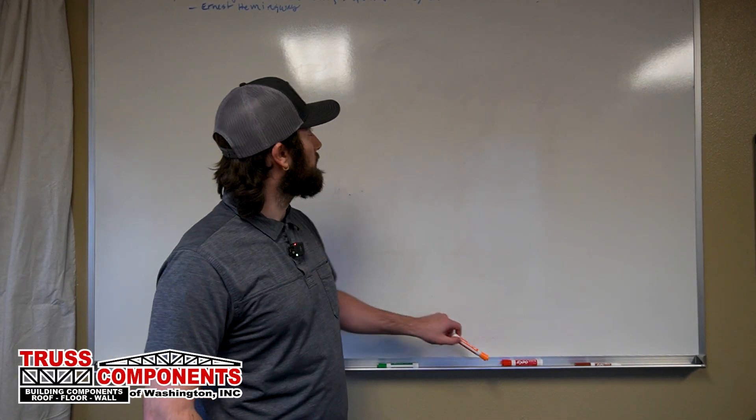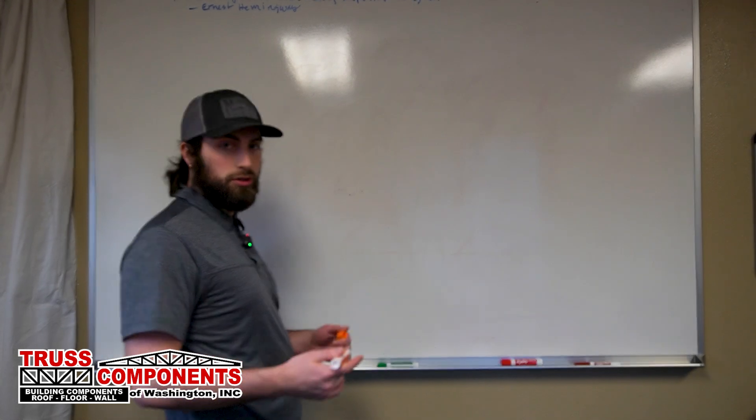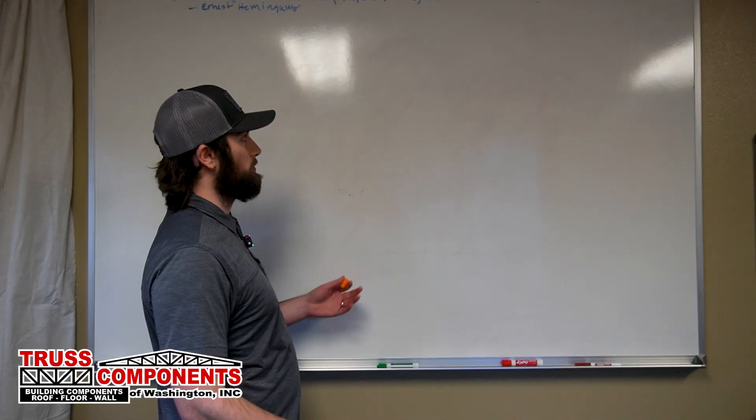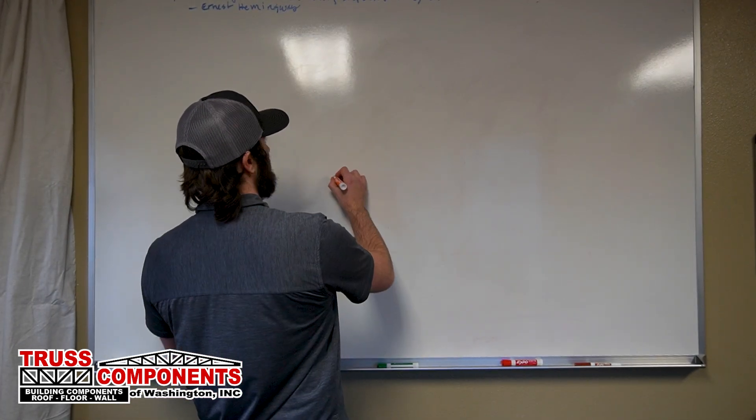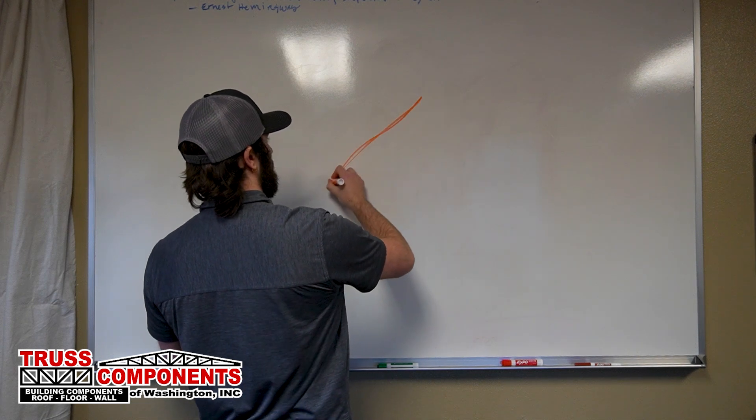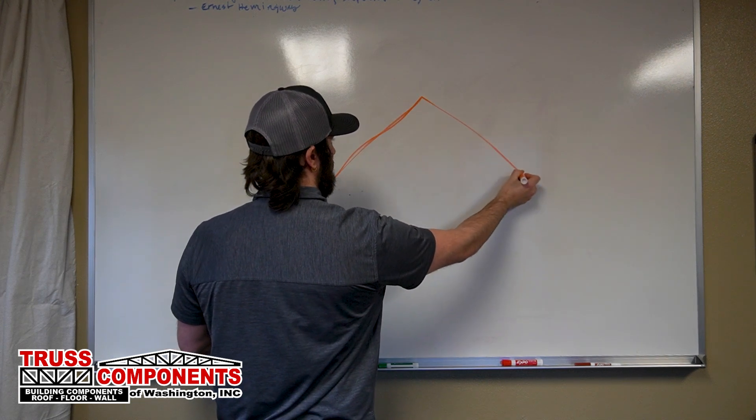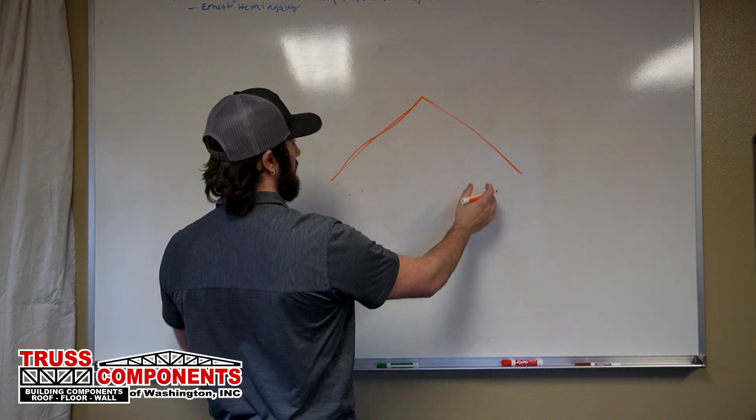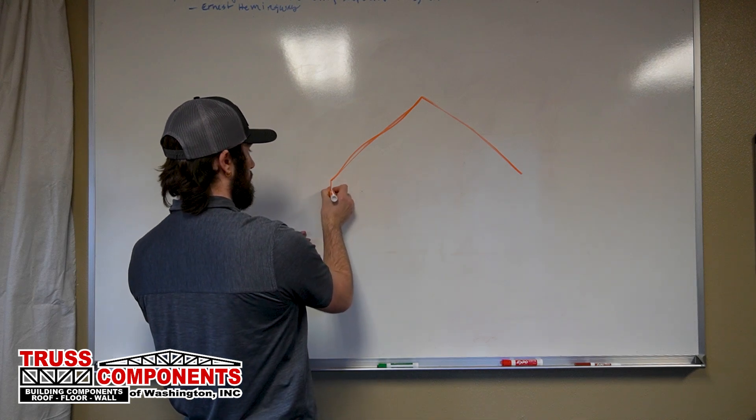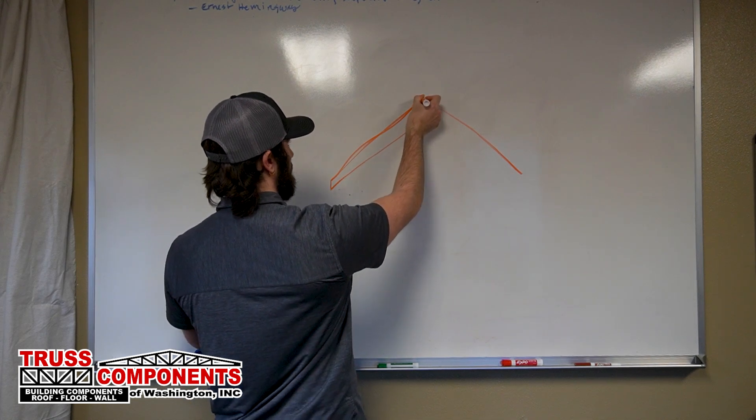So most trusses are shaped like a triangle, but they can be shaped like pretty much anything. For a basic truss, we have the top defining member which we refer to as the top chord.